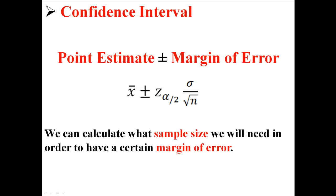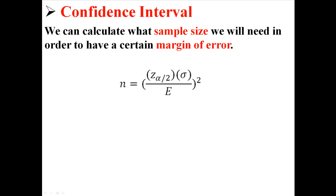We can calculate what sample size we will need in order to have a certain margin of error that we specify, and we can use this equation to do that, which has some things we've already known, and E, which is the margin of error that we specify. We're going to try to find n, which is the sample size we'd need to have that margin of error.